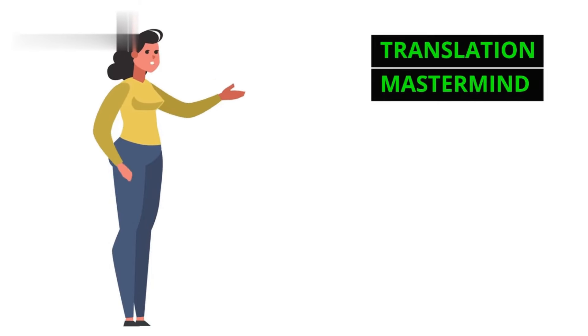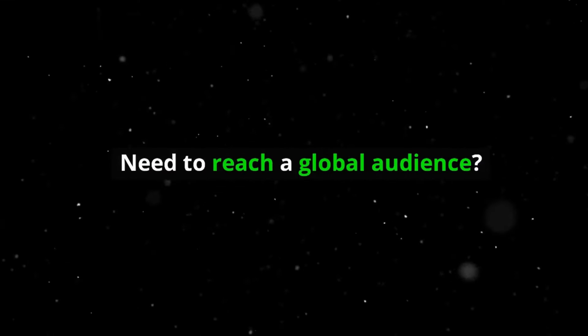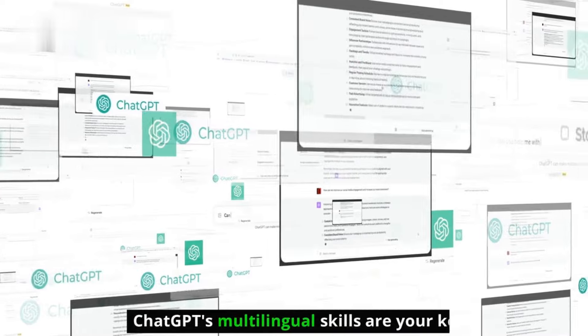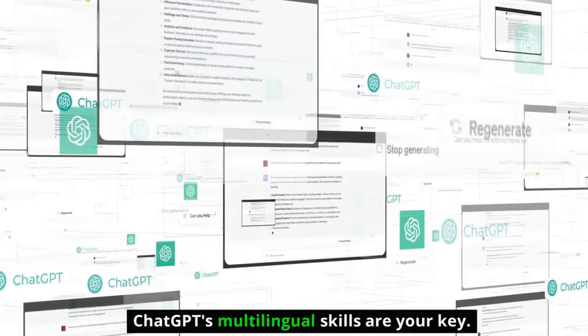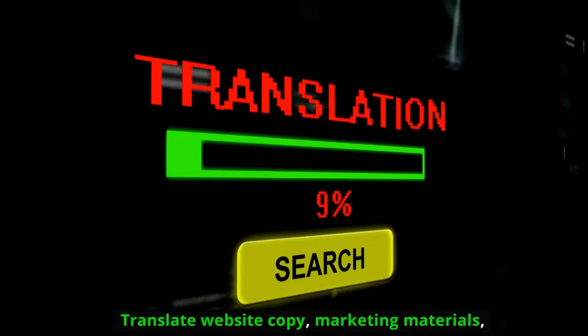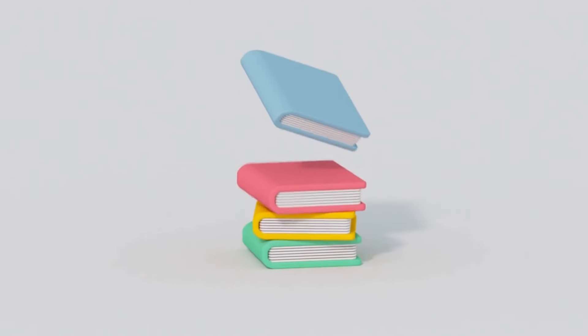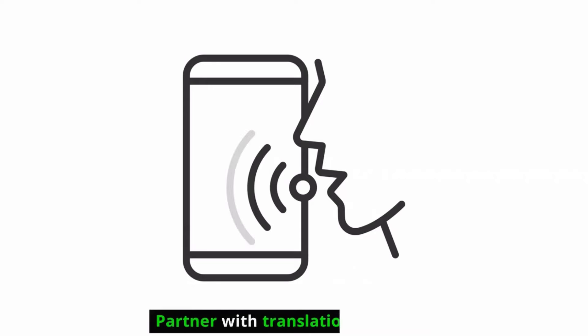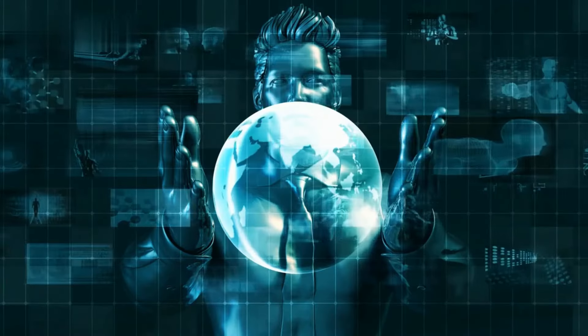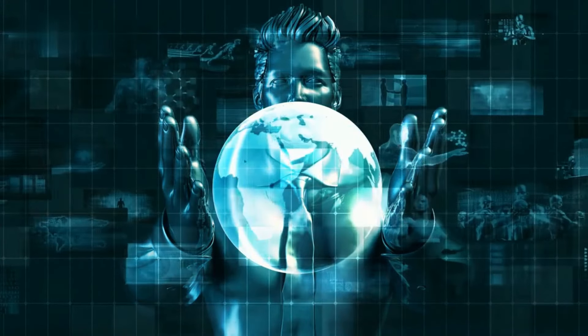Number 2: Translation Mastermind. Need to reach a global audience? ChatGPT's multilingual skills are your key. Translate website copy, marketing materials, or even books into multiple languages with accuracy and speed. Partner with translation agencies or offer direct services to businesses with international reach.